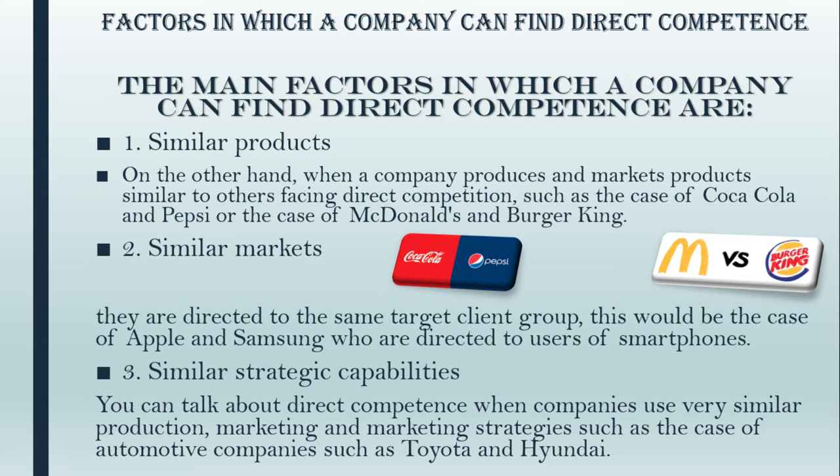An example of similar markets would be Apple and Samsung, who both target users of smartphones. Similar strategic capabilities — you can talk about Direct Competition when companies use very similar production, marketing, and distribution strategies, such as automotive companies like Toyota and Hyundai.